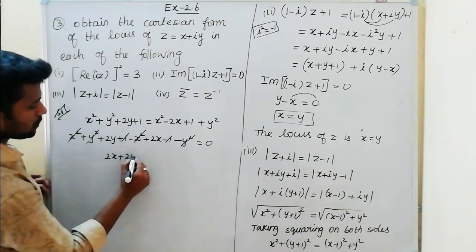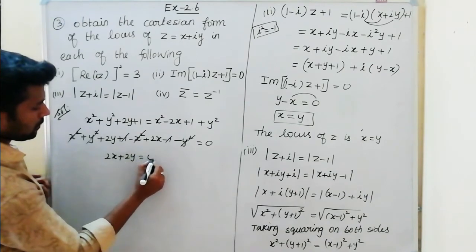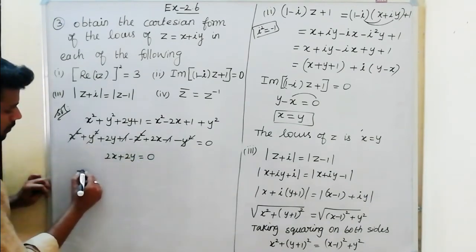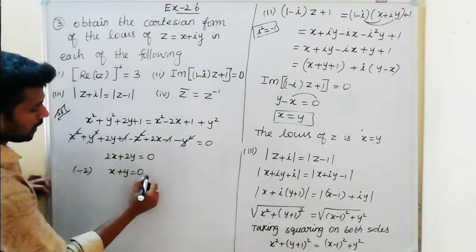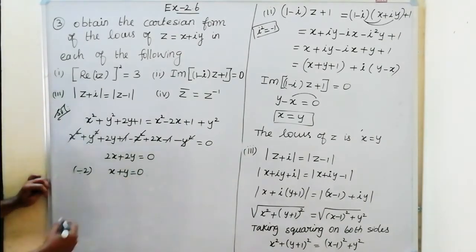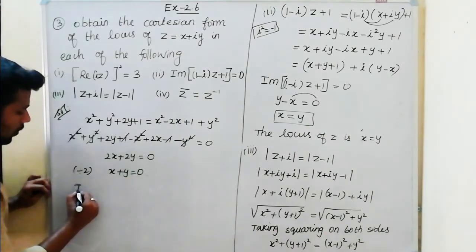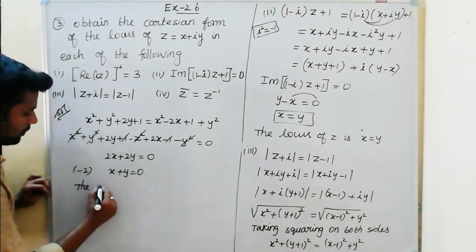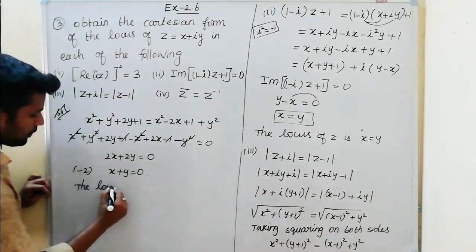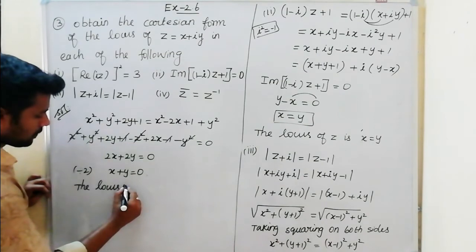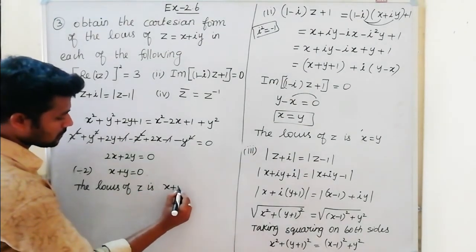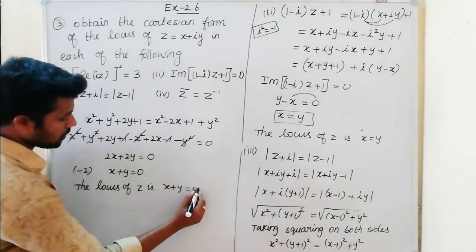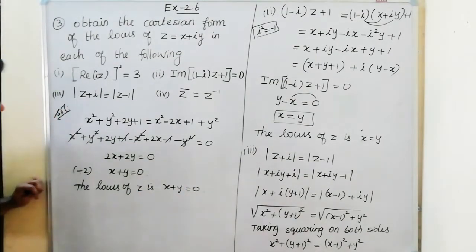So 2x plus 2y equals 0. Dividing by 2 gives x plus y equals 0. Therefore, the locus of z is x plus y equal to 0.